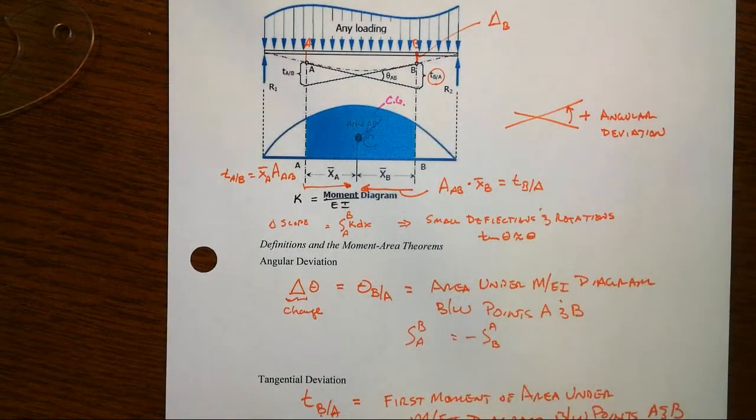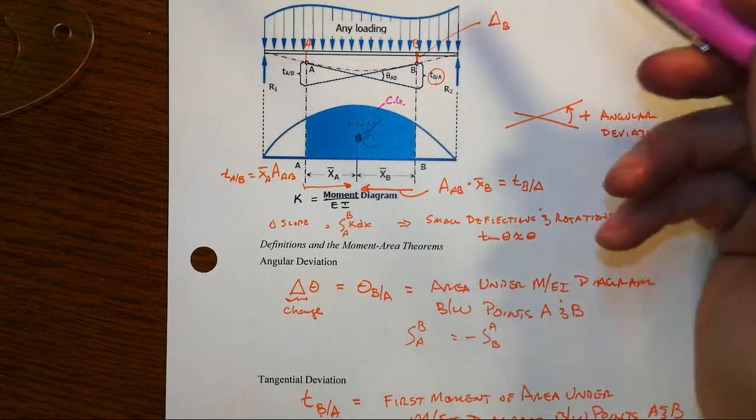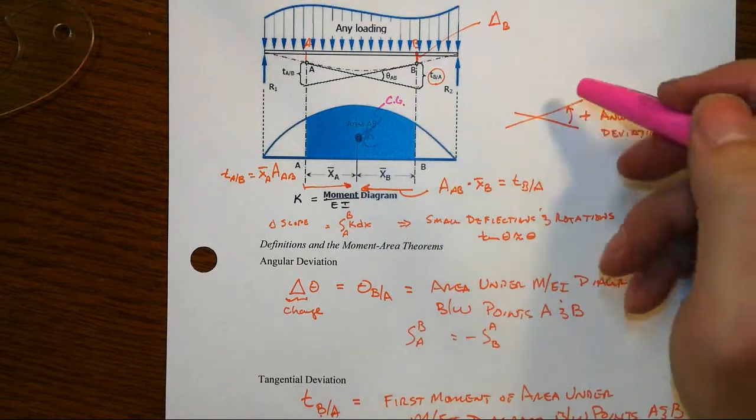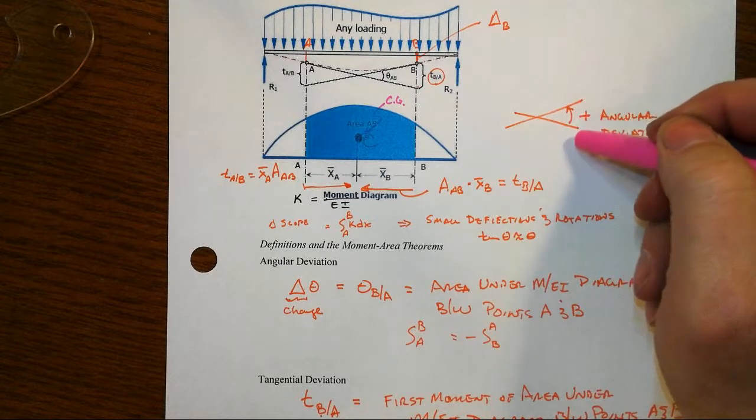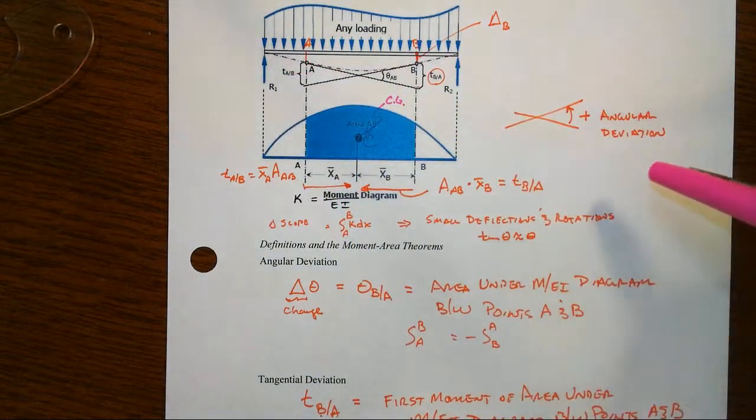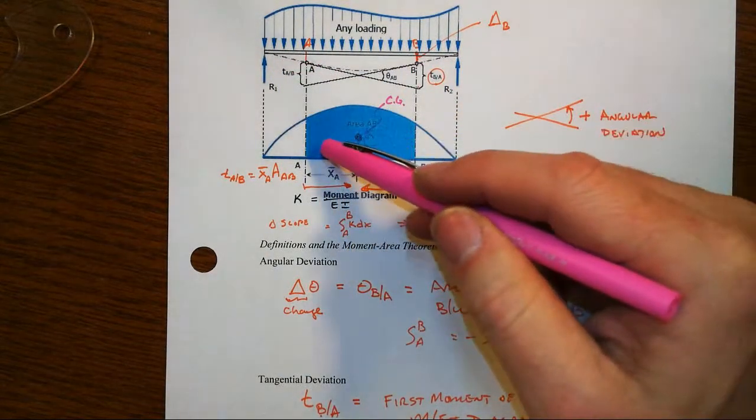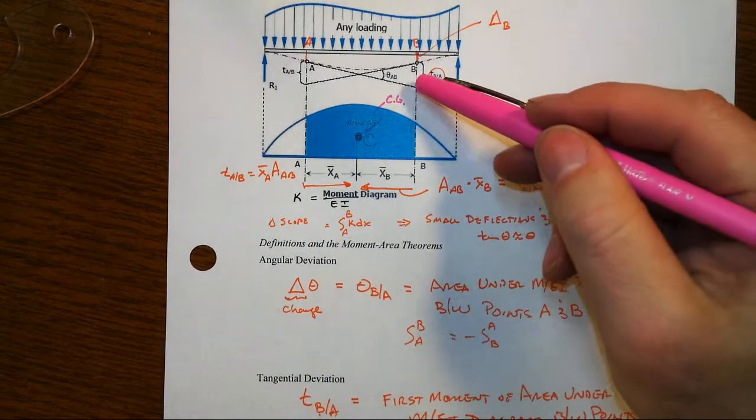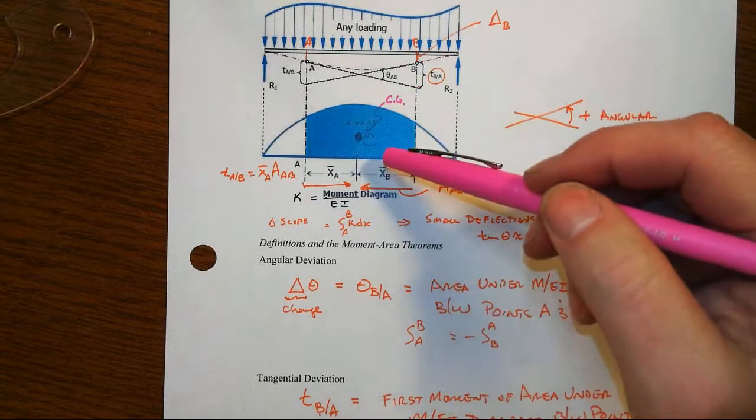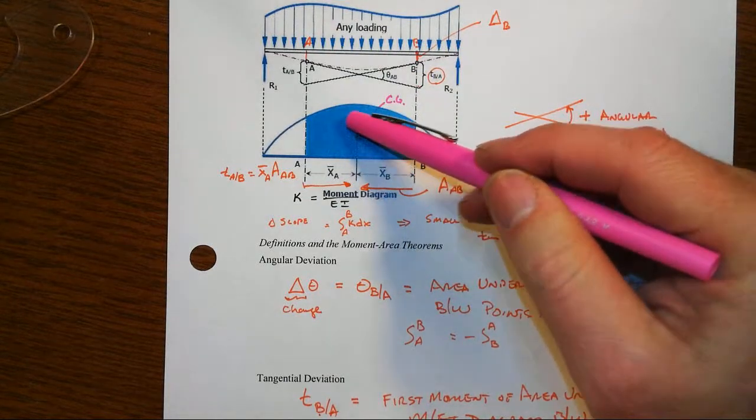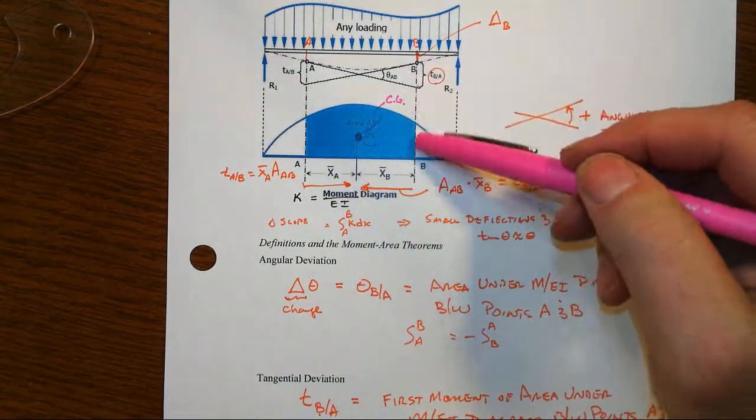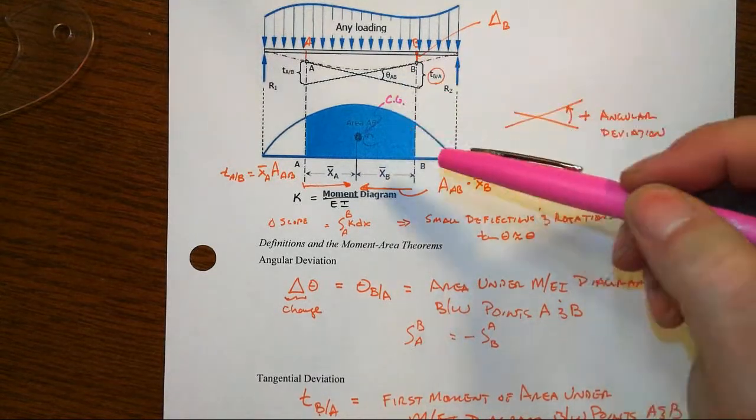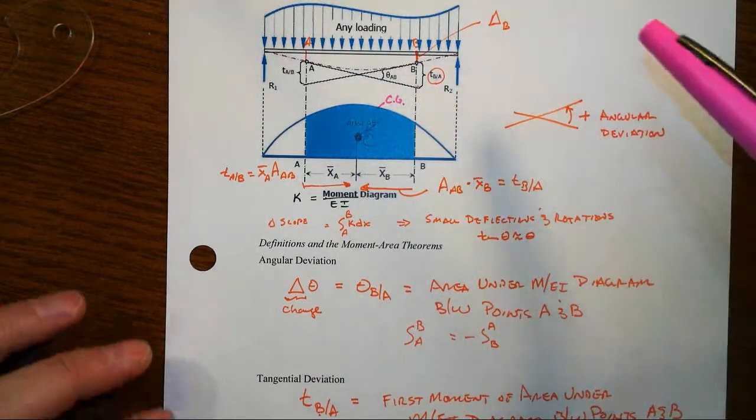Just to wrap up, we have two moment area theorems. One that gets us the change in angle between two tangents drawn to the elastic deflected curve. That's just simply the area under the M over EI diagram between those two points. And then we can calculate tangential deviations, which is going to be equal to the first moment of this area with respect to the point in question. That's going to turn out to be useful; that gets into the application side of things and that's what we'll do in a different video.